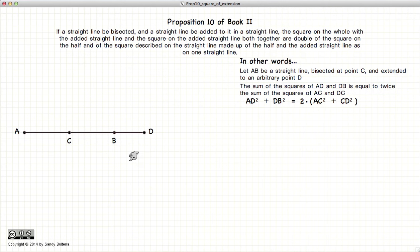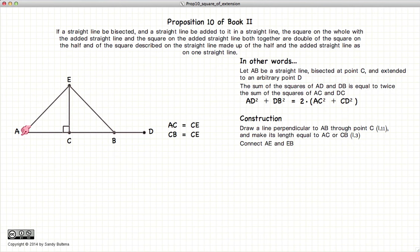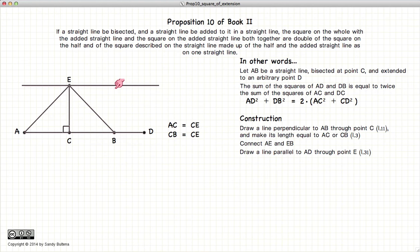To demonstrate this, first we have to draw our figure. We will draw a line perpendicular to AB through the point C. Define the point E such that it is equal to AC and CB. Draw our lines AE and EB. Now we will draw a line parallel to AB through the point E, and draw a line parallel to EC through the point D.